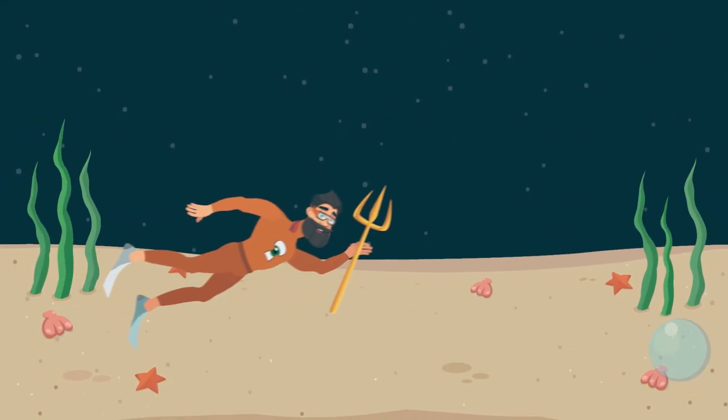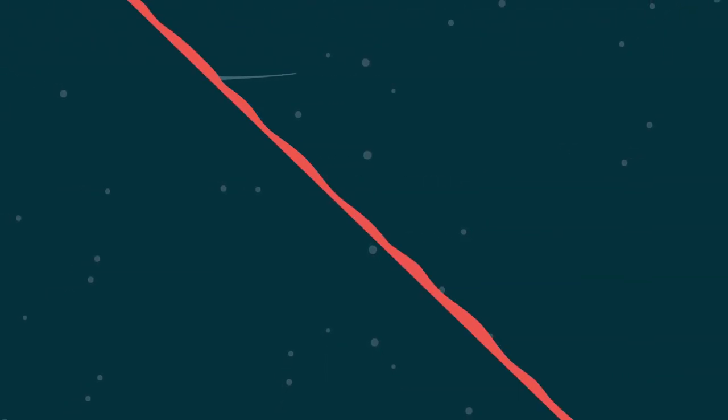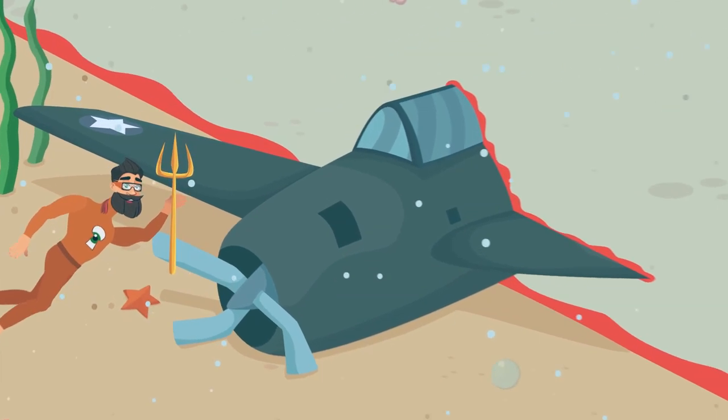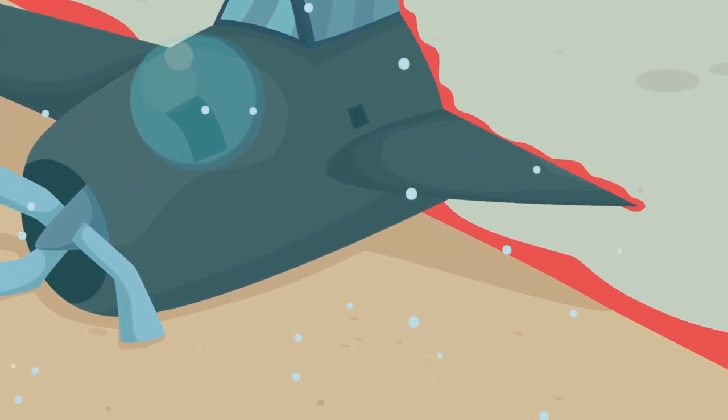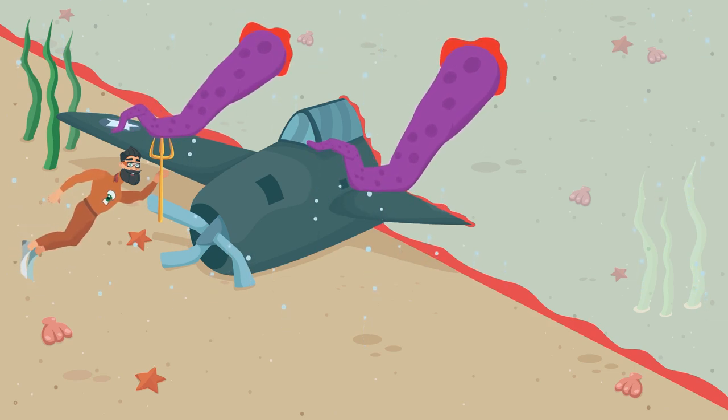But be extremely careful in the Bermuda Triangle. Equipment fails, a compass wouldn't point in the right direction. Ships and planes disappear as do people. Perhaps you'd be able to unravel the mystery of this anomalous zone and find 5 torpedo bombers that vanished without a trace in 1945, along with their crews.